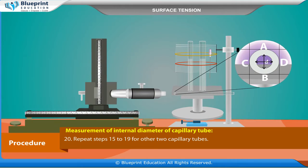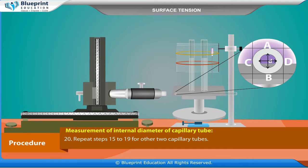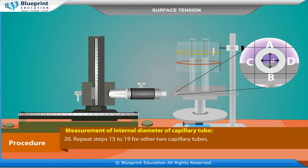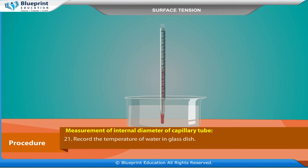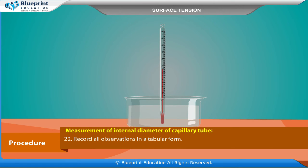Repeat the diameter measurement steps for the other two capillary tubes. Record the temperature of the water in the glass dish. Record all observations in a tabular form.